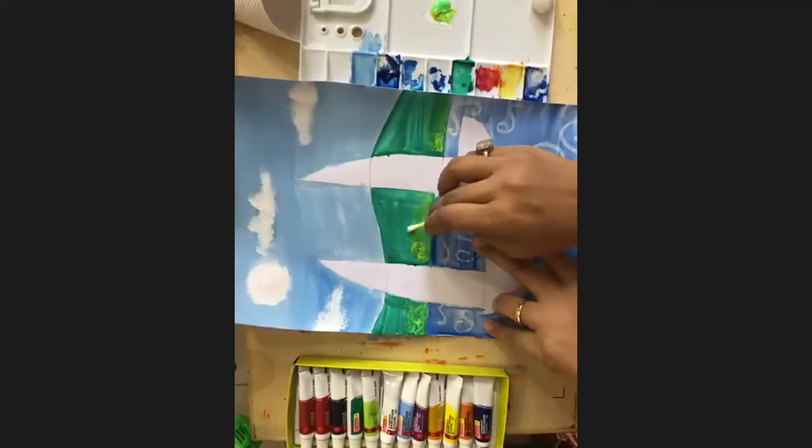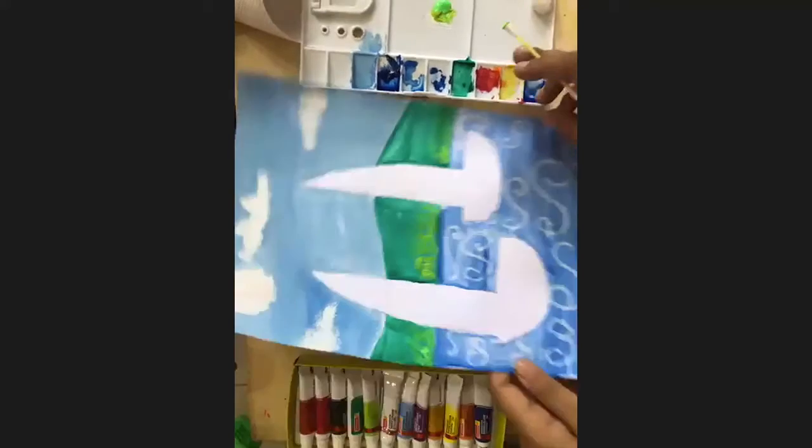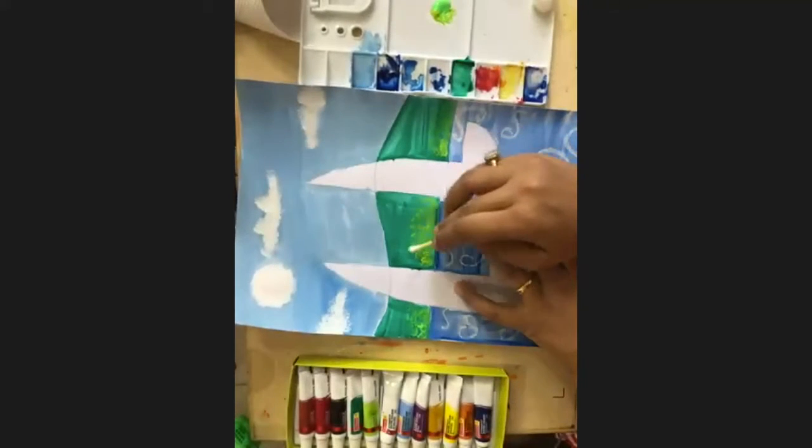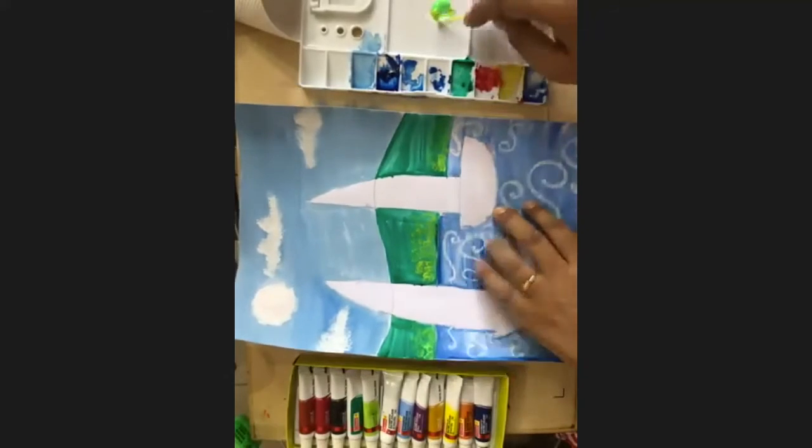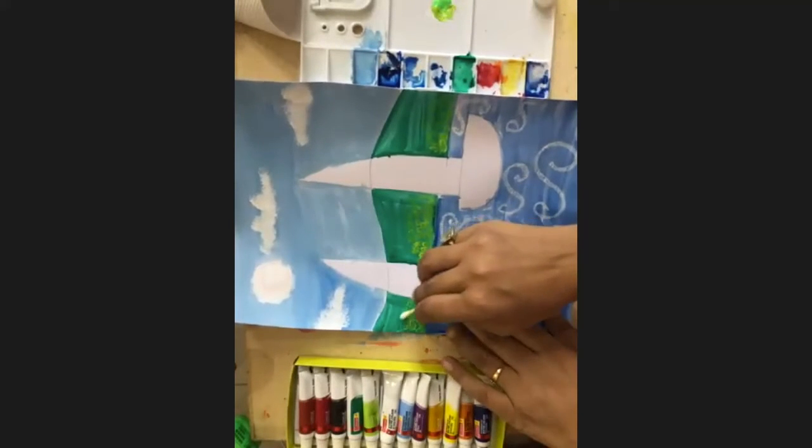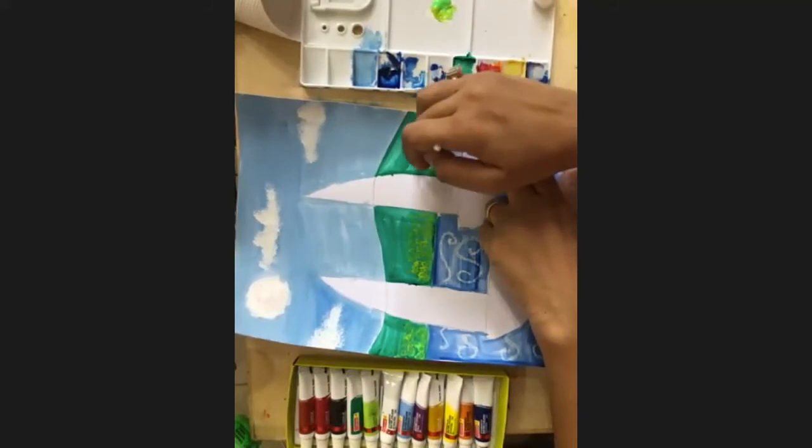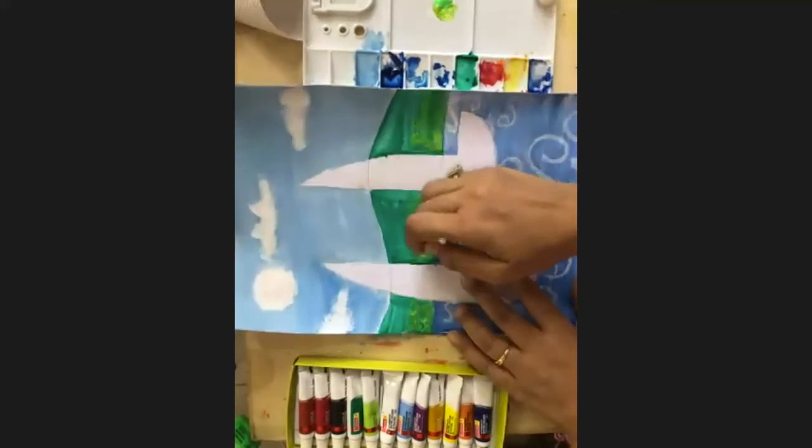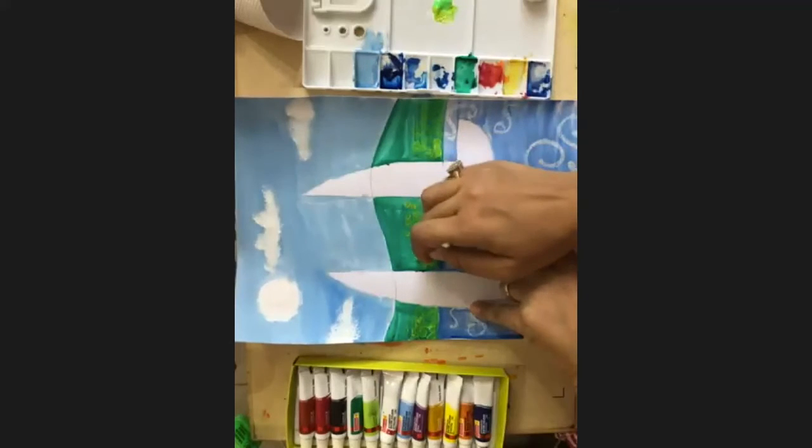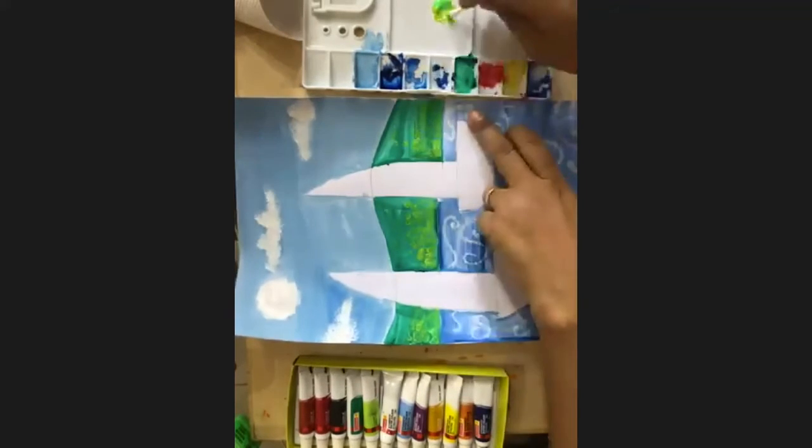So, see how it is looking now. As if there are so many small, small bushes in the mountain. You can do it on full mountain also. You can do it only in the bottom as you like. So, I am just filling my mountain with a green color.